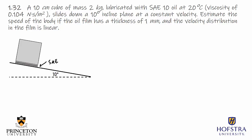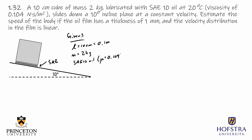We're told that the velocity is constant. Let's jot down all of our givens. The side length of the cube is 10 centimeters, which equals 0.1 meters. The mass of the cube is 2 kilograms. We have SAE 10 oil and its viscosity mu is 0.104 newton seconds per meter squared.